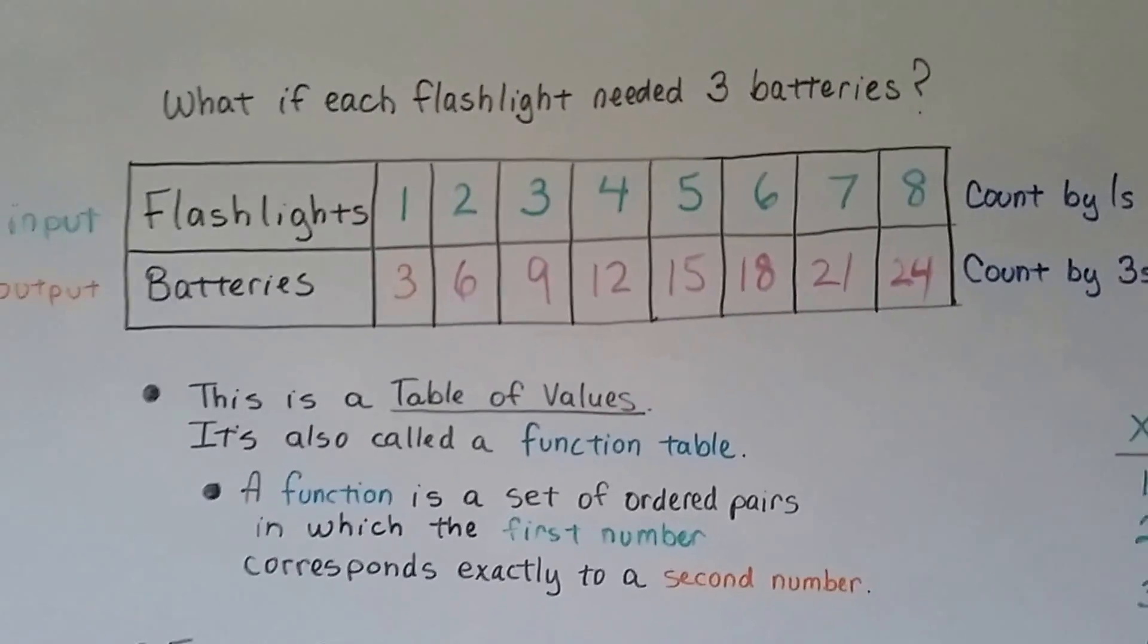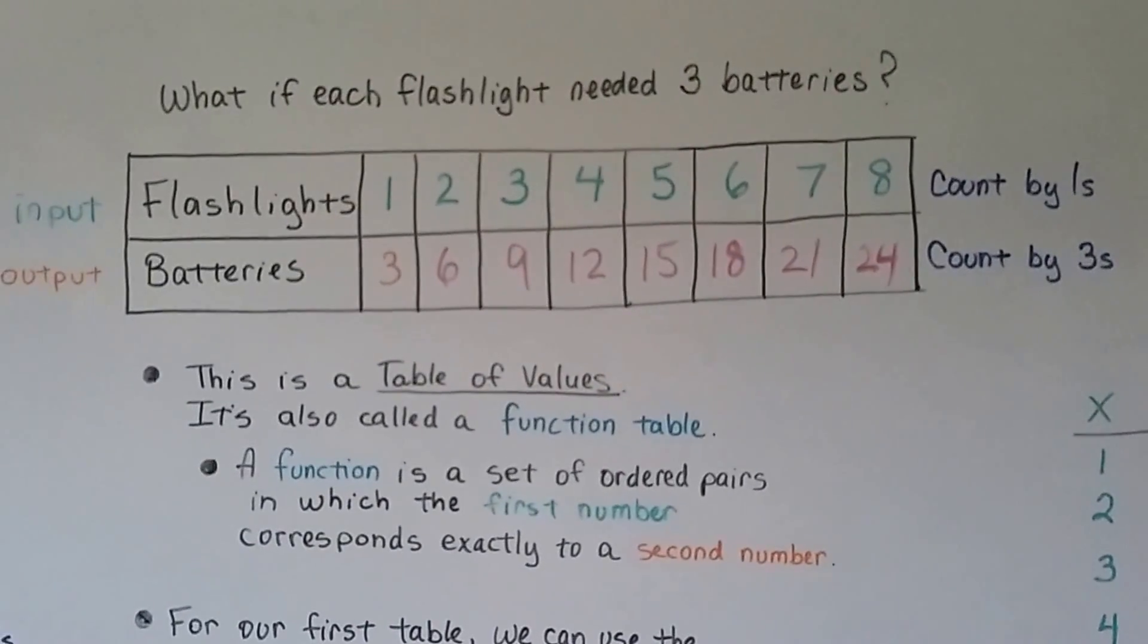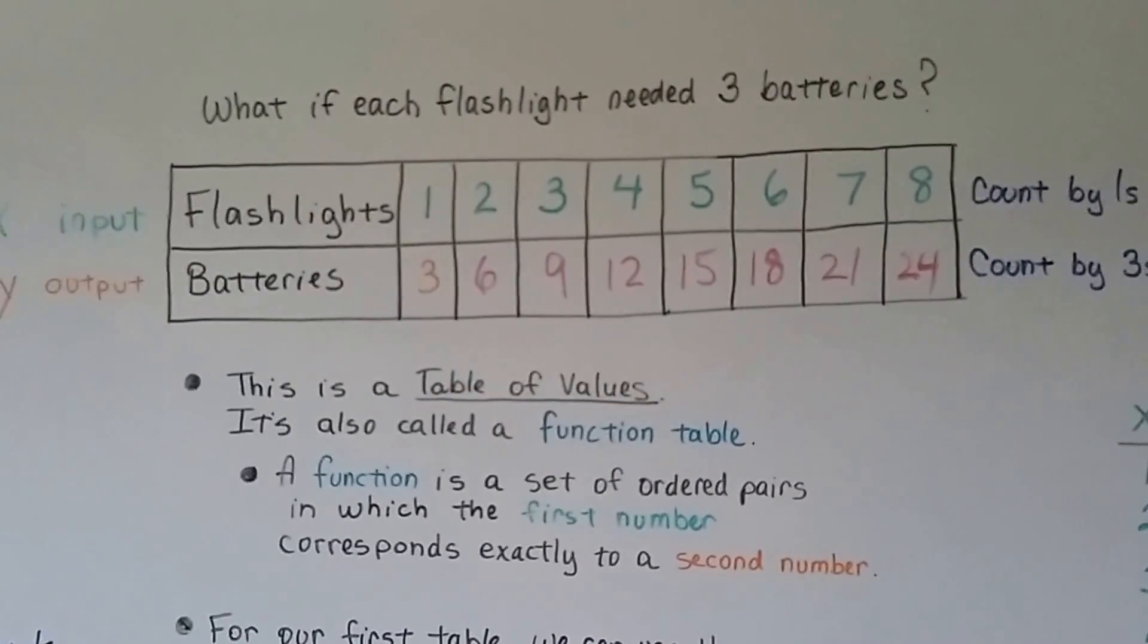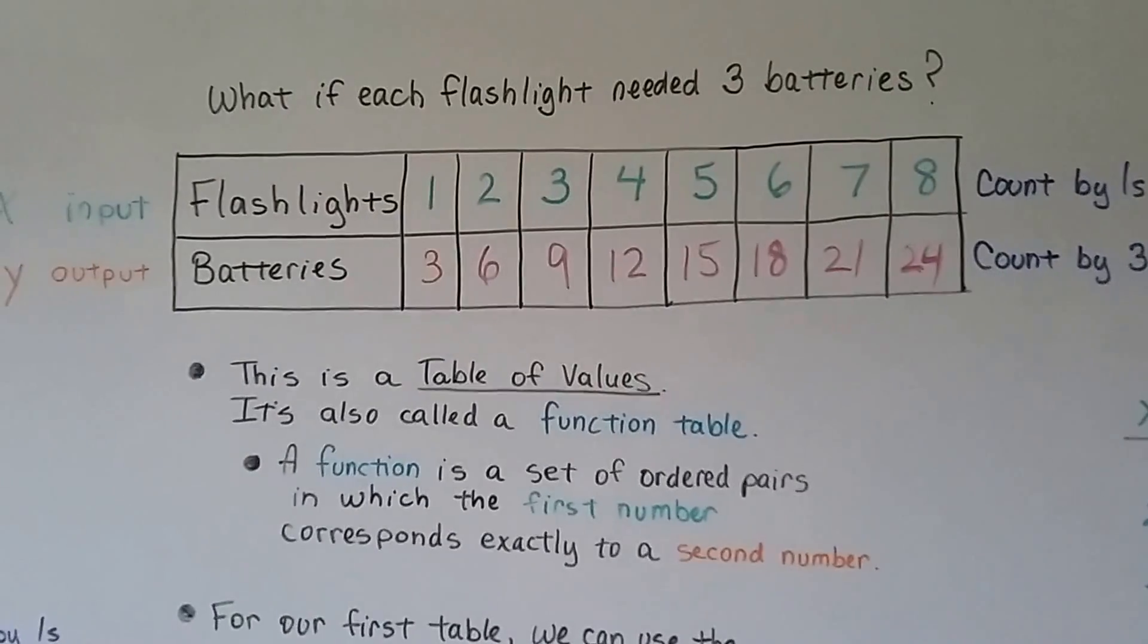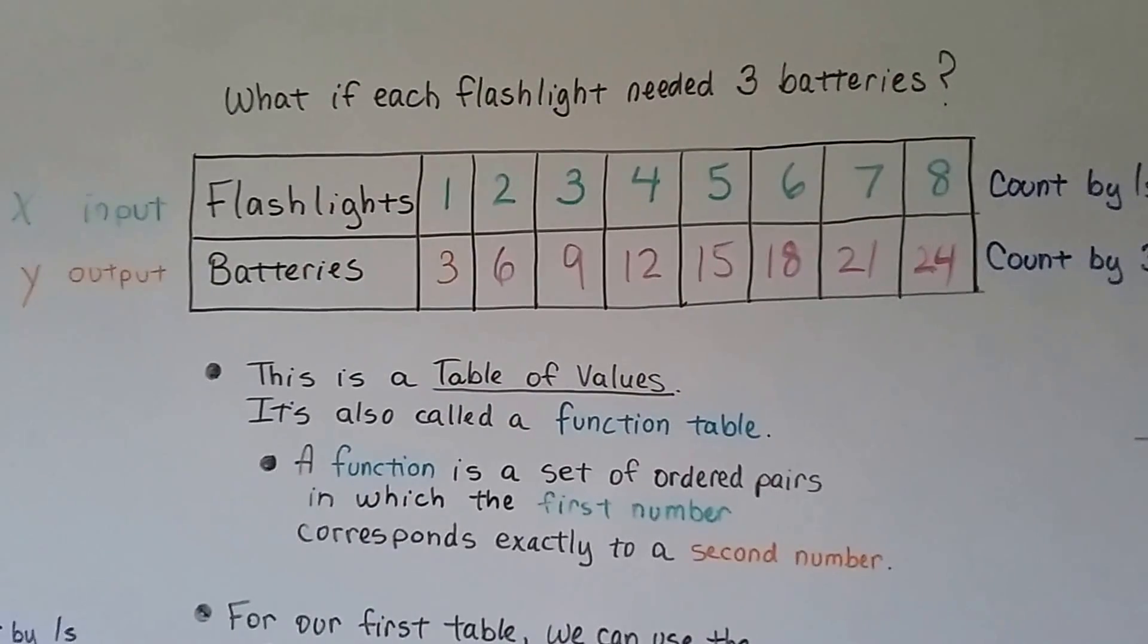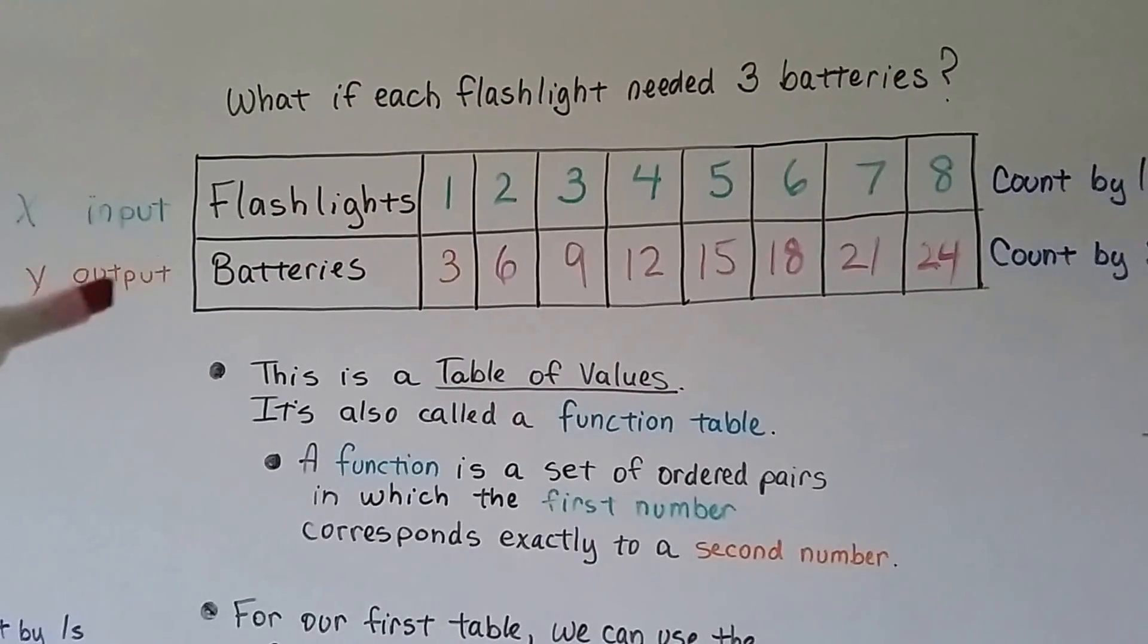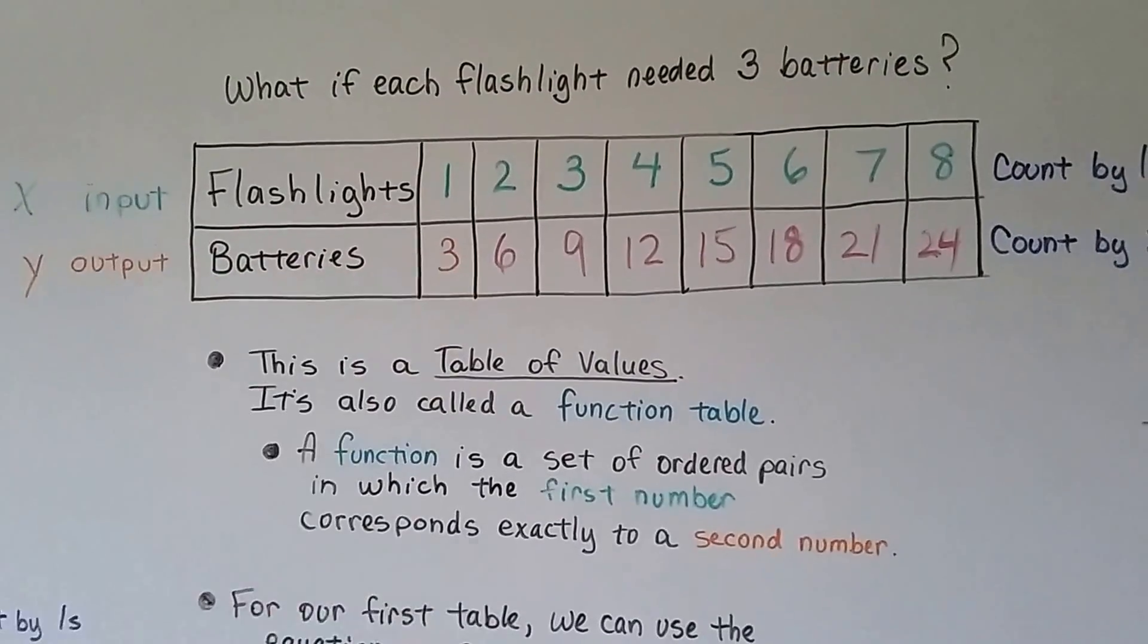We just followed the rule of times three, and we can fill in the table. So, the rule for this table is multiply by three. That's the function value. If we input a number, we multiply it by three to get our output.